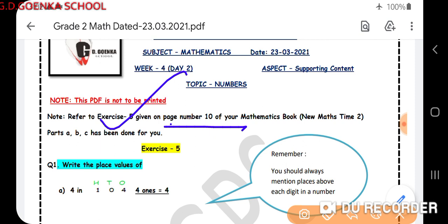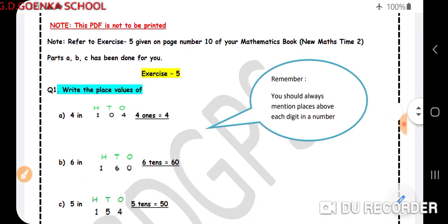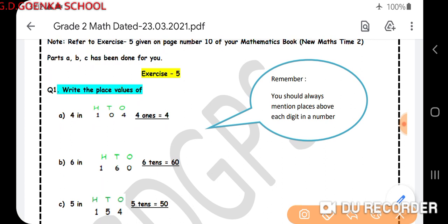As you know, we learned what is place value. Place value means the place of each digit in a number, or we can say the value of each digit in a number that is represented by the digit's position. Today we are doing the exercise on the same topic, place value.